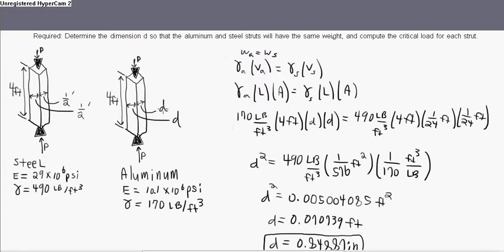What they want us to solve first is the D of the cross-sectional area of the aluminum. And they want the D to be that so the aluminum and steel struts have the same weight. So I go ahead and say that the weight of the aluminum equals the weight of the steel, because that's what they're asking. They're saying that it has to be that way. And they want us to solve for the D, so that's what I do.